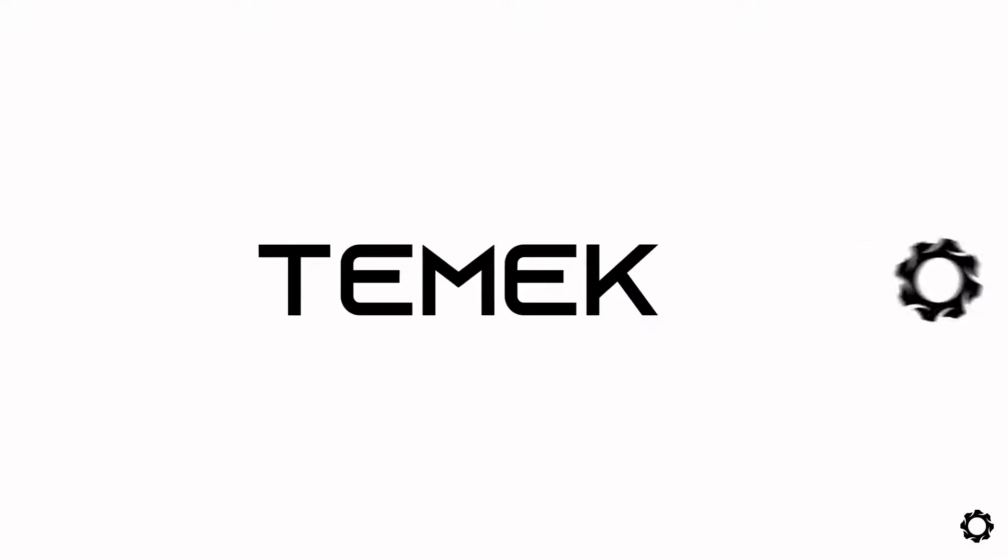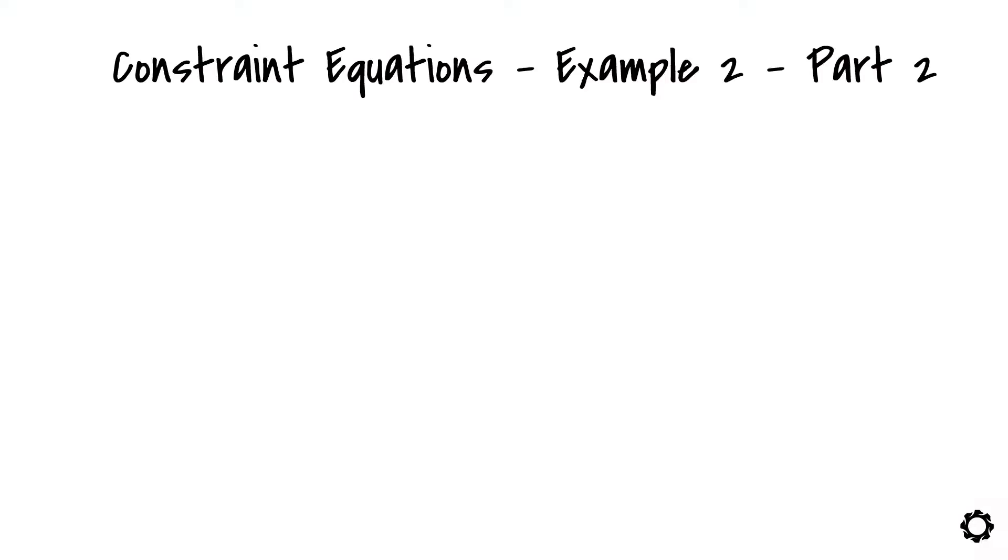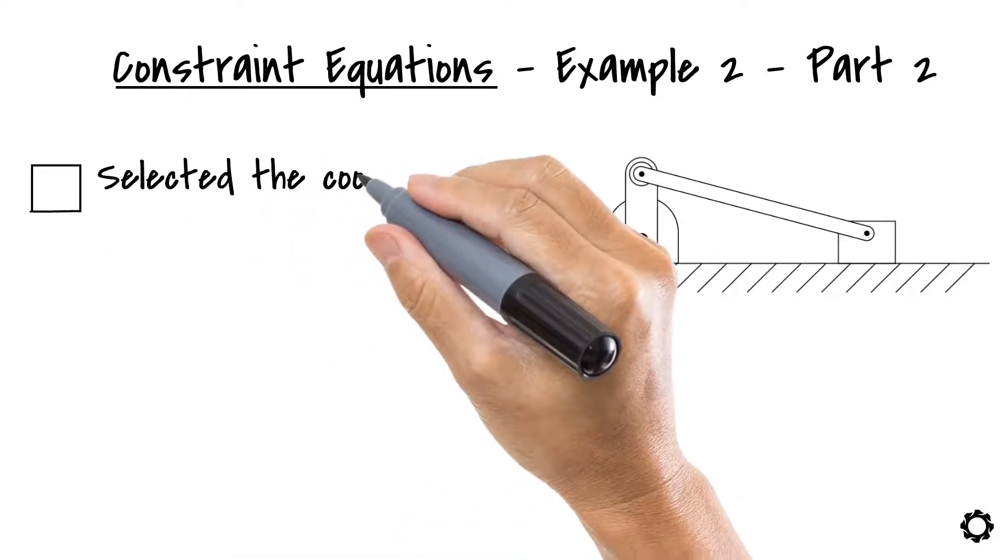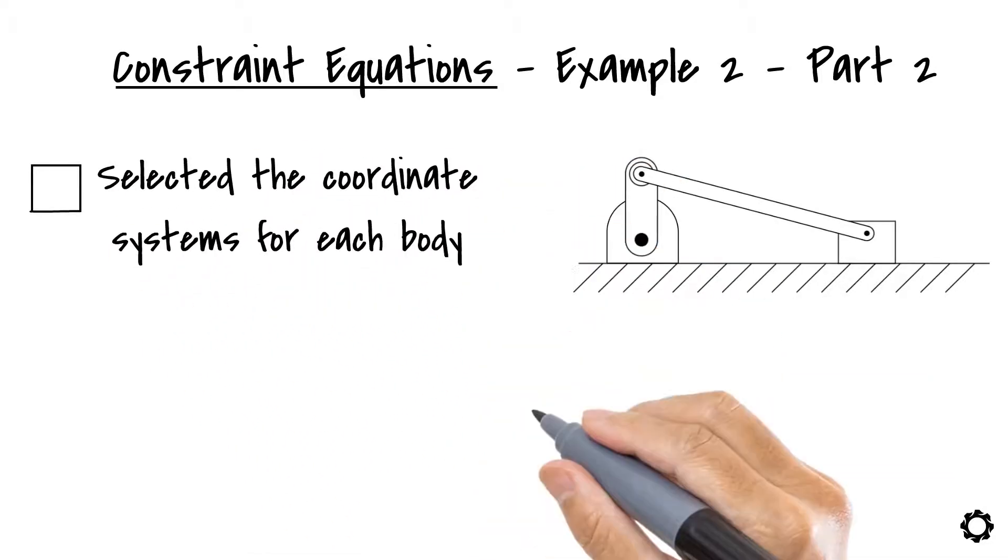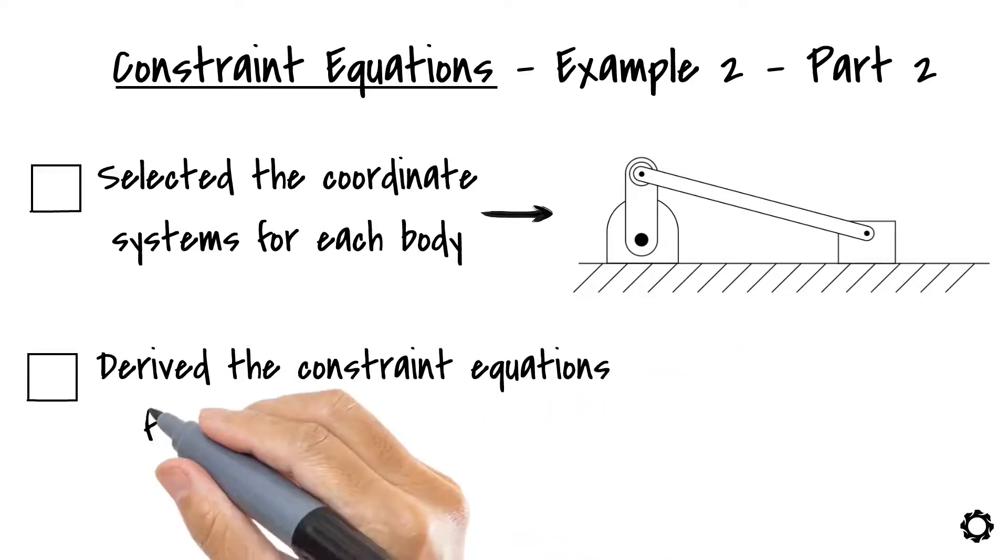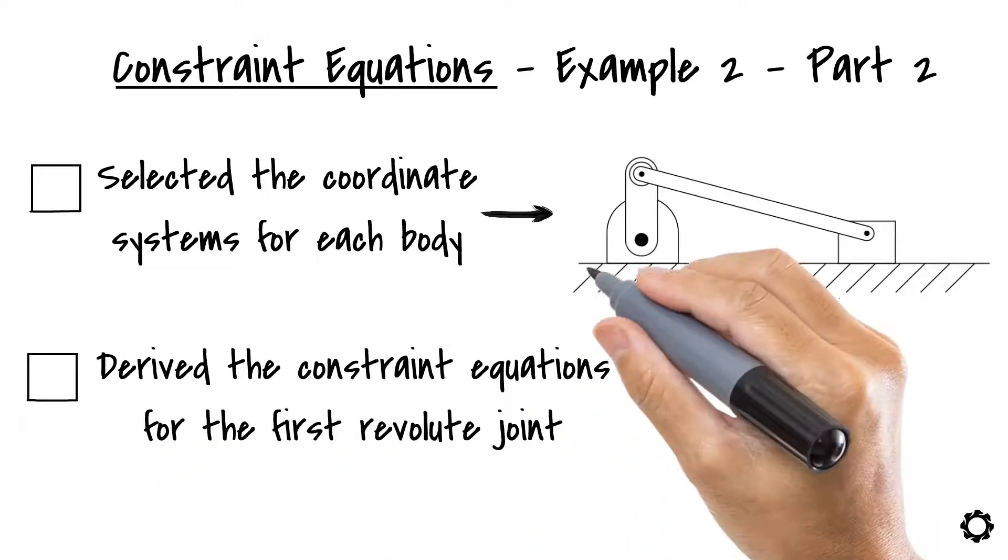Hi and welcome to Temeco. In this video we are continuing where we left off at the constraint equation formulation of the crankshaft mechanism. We have selected the coordinate systems for each body of the system and also derived the constraint equations for the first revolute joint located at point O.